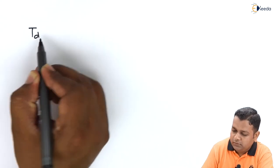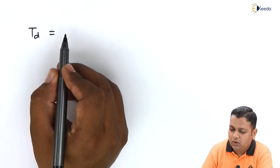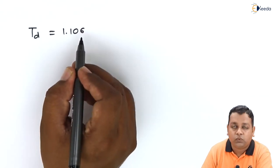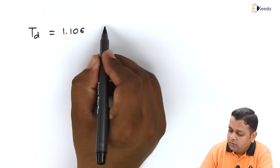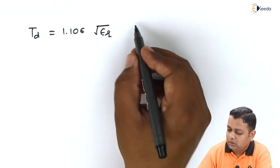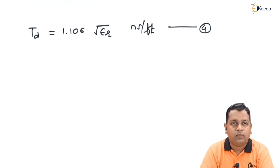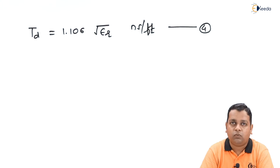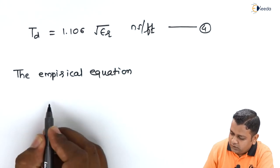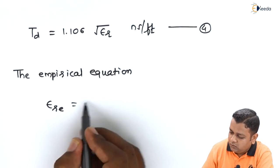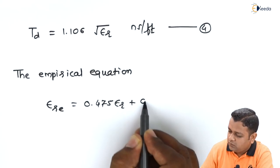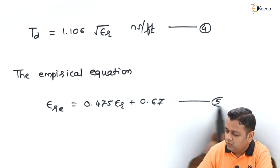For a non-magnetic type of material, the propagation delay T subscript d in terms of nanoseconds per foot is 1.016 multiplied by the square root of epsilon r, which is equation number 4. For the effective relative dielectric constant of the on-board material, the empirical equation is: epsilon subscript r-e equals 0.475 times epsilon r plus 0.67, which is equation number 5. Here epsilon r is the relative dielectric constant and epsilon subscript r-e is the effective relative dielectric constant.